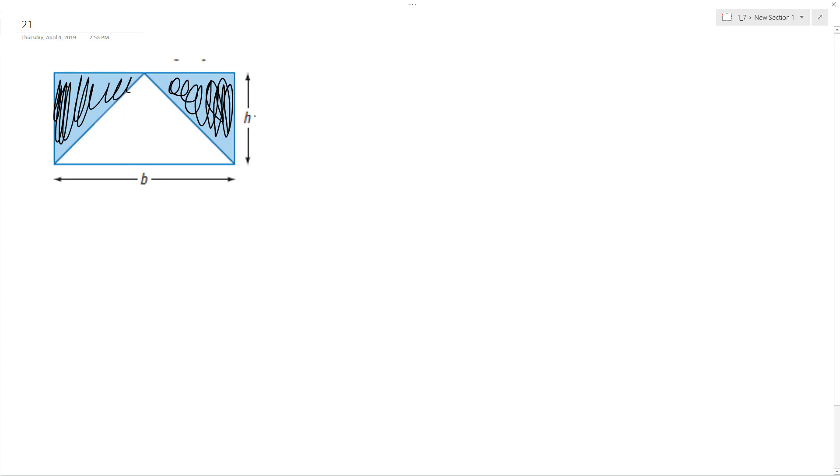Alright, so the area of a square is going to be equal to width times height, or length times width, so in this case B times H equals area of square. That's the total area, so that's going to be everything.